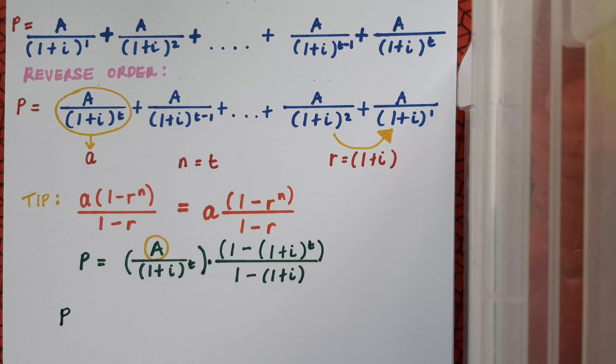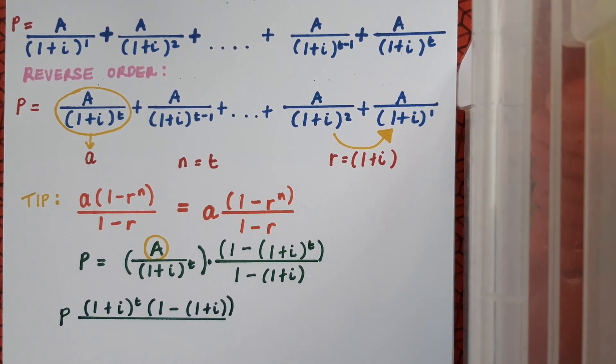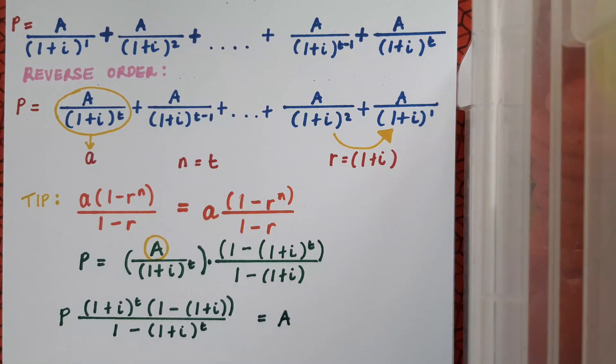So let's see how that should look. So first of all the P is going to stay put and then in the numerator I'm going to have 1 plus I to the T times 1 minus 1 plus I and in my denominator I'm going to have 1 minus 1 plus I to the power of T and there's A by itself over on the right hand side.